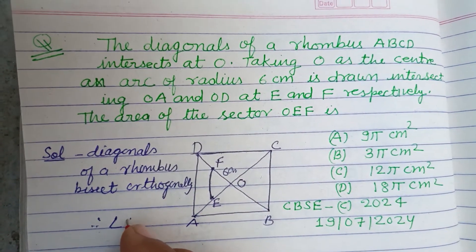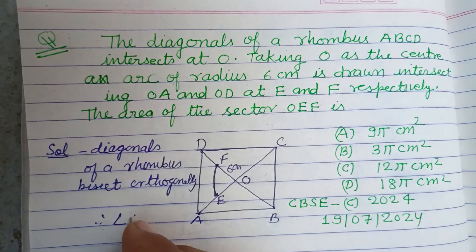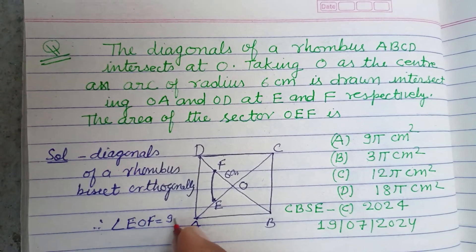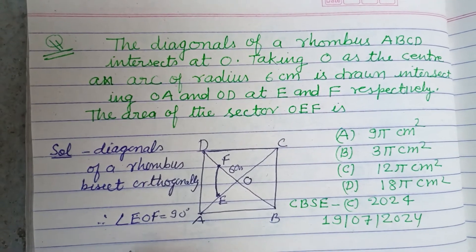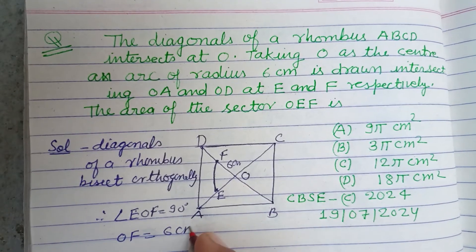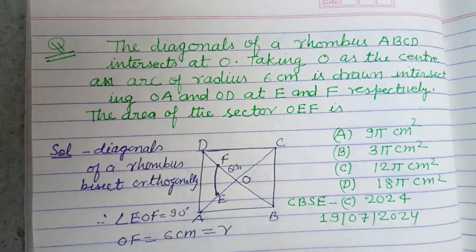So angle EOF equals 90 degrees, and OF equals 6 centimeter which equals the radius.